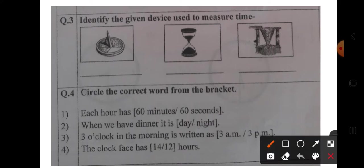Identify the given device used to measure time. First one is sundial. Second one is hourglass. Third one is water clock.